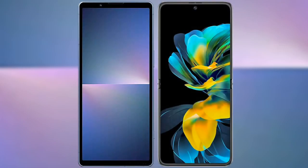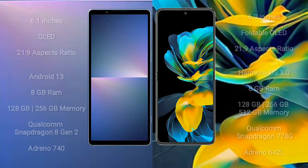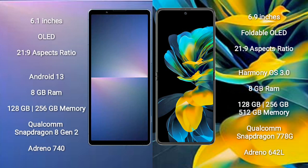I will compare the new Sony Xperia 5 Mark 5 with Huawei Pocket S. Sony Xperia 5 Mark 5 comes with a 6.1-inch OLED display and an aspect ratio of 21:9. Huawei Pocket S comes with a 6.9-inch foldable OLED display and an aspect ratio of 21:9.